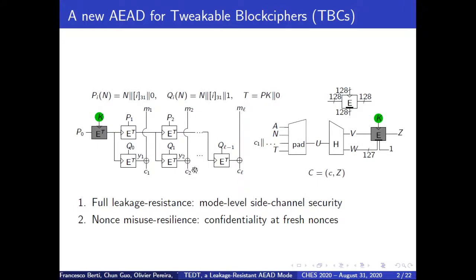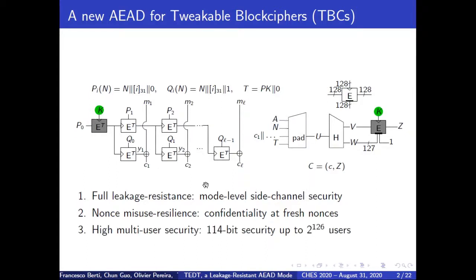Second is the so-called non-misuse resilience. It means the confidentiality of messages encrypted by fresh nonces is always ensured even if the nonce got repeated. Third is high multi-user security. Using such a configuration, it ensures 114-bit security up to 2^126 users.